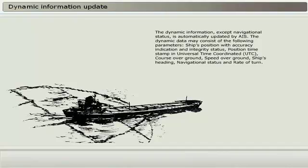The dynamic information, except navigational status, is automatically updated by AIS. The dynamic data may consist of the following parameters: ship's position with accuracy indication and integrity status, position time stamp in universal time coordinated (UTC), course and speed over ground, ship's heading, navigational status, and rate of turn.